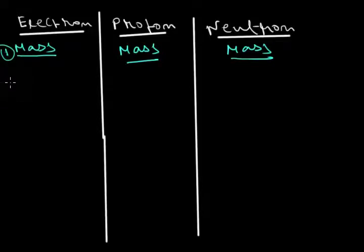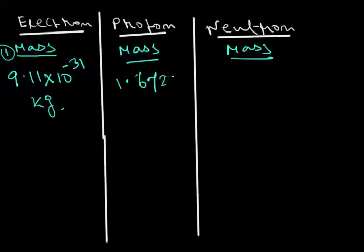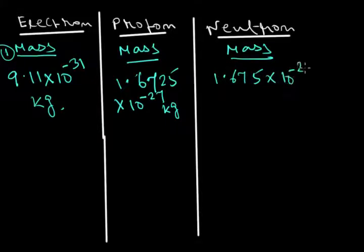Mass of electron is 9.11×10^-31 kilograms. Mass of proton is 1.6725×10^-27 kilograms. And mass of neutron is 1.675×10^-27 kilograms.